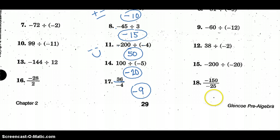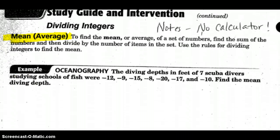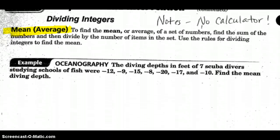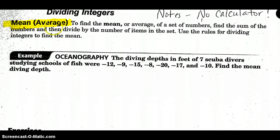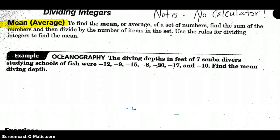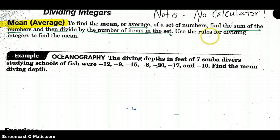Go ahead and finish columns 1 and 2 on your own. On the back of this page is dividing integers continued, where we talk about the mean average. The definition of mean is average: to average numbers, you find the sum of the numbers and then divide by the number of items in the set. We will use our rules for dividing integers.